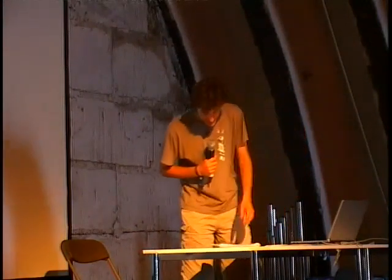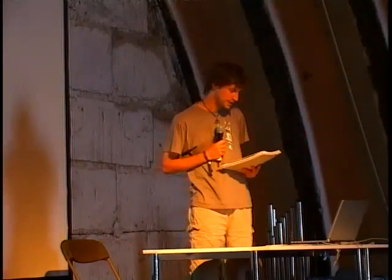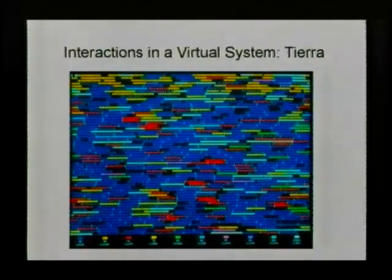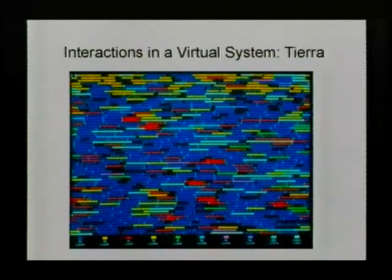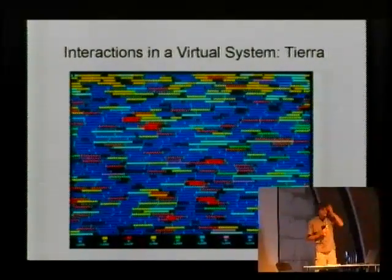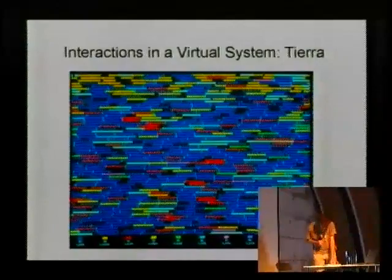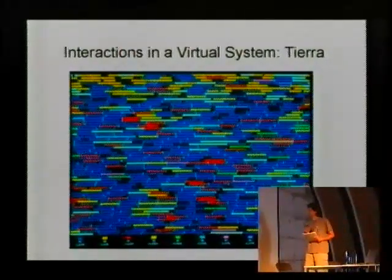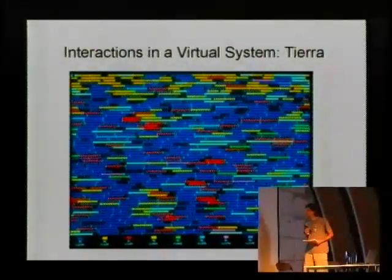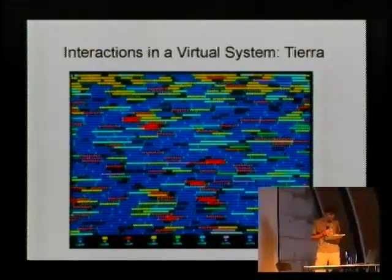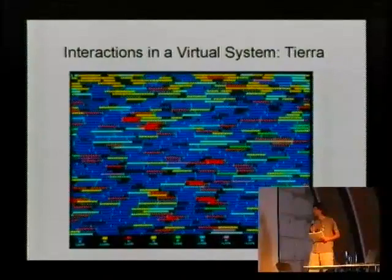And you can even get such relationships in communities of digital organisms. A well-known example is the virtual world Tierra, which was created in the early 90s by Thomas Ray, who was a tropical ecologist. And there are some derivatives of this such as Avida. Tierra is basically a virtual world, a virtual machine actually, in which small assembly programs can run and compete for memory. You can see a memory map here. And for CPU cycles.